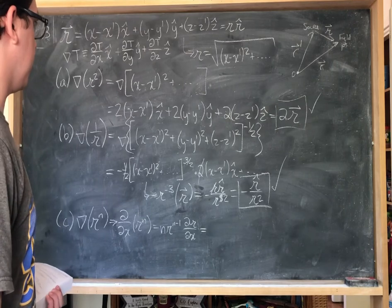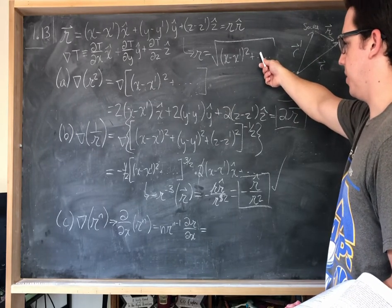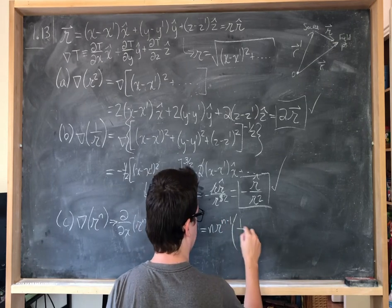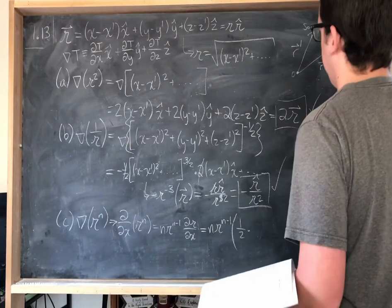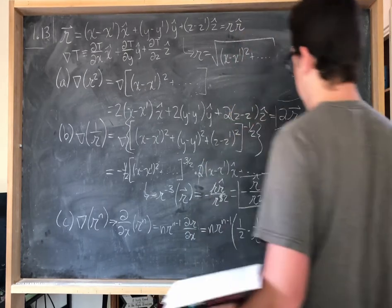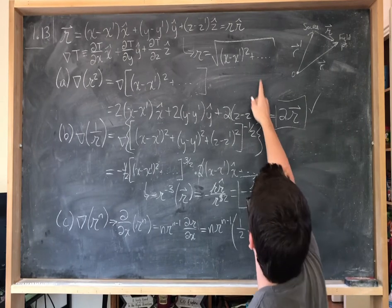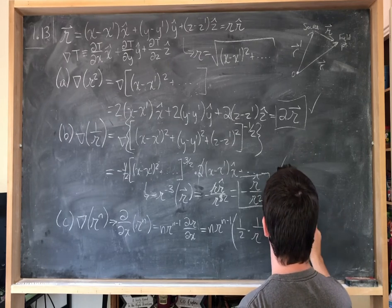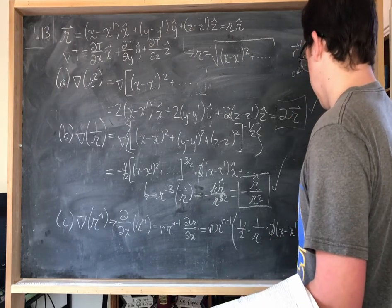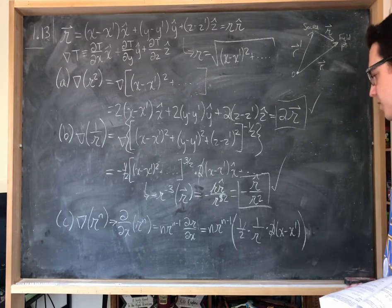Computing d(script r)/dx: using the chain rule on the square root, we bring down the one-half, the quantity drops to the minus one-half power — which is the same as one over script r — and then we multiply by the derivative of the inside, which is two times (x minus x-prime). The twos cancel, leaving n times r to the n minus one, times (x minus x-prime) over r, in the x-hat direction.